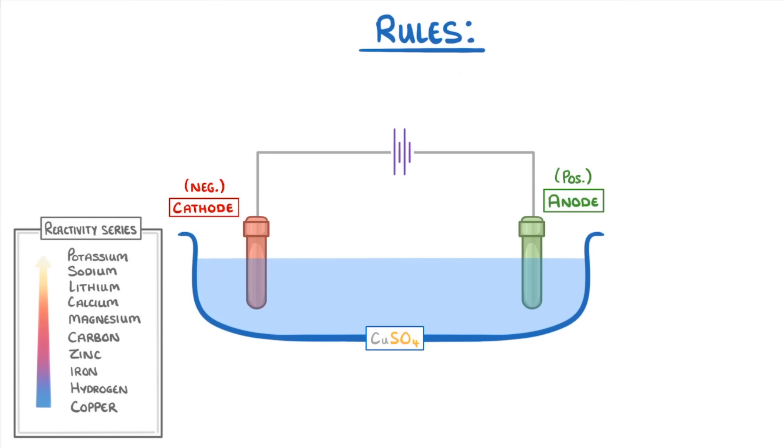Before we finish, let's try one more example where our electrolyte is aqueous sodium chloride. In this electrolyte, we'll have sodium ions, chloride ions, hydrogen ions, and hydroxide ions.